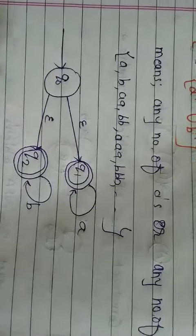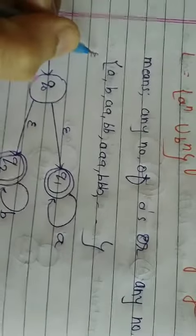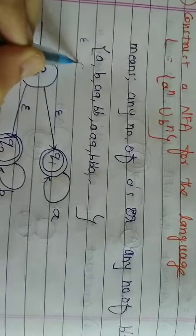So, Q0 is our initial state. And suppose that Epsilon is a null string. And then, after A state, A comes to A. So, after B state, B comes to B. So, I will draw the NFA.